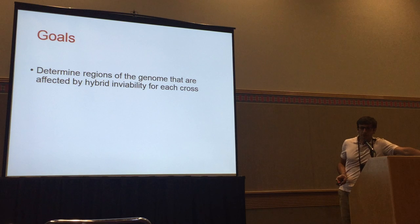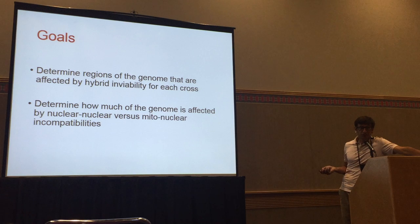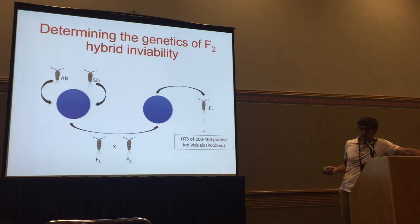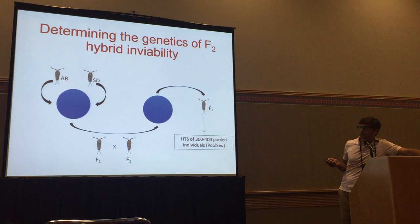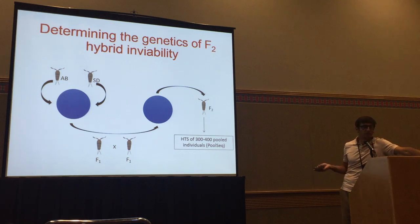The goal of my project was to look for regions of the genome involved in hybrid inviability, and to determine how much of that is due to nuclear-nuclear versus mitonuclear incompatibilities. The way we do this: showing just two example populations, AB is around LA and SD is San Diego. We cross them, get F1 hybrids, cross them, get F2 hybrids, and then we pool about 300 to 400 individuals and sequence.